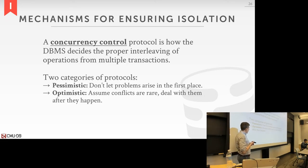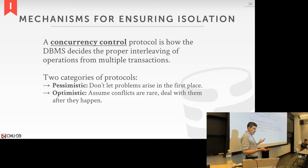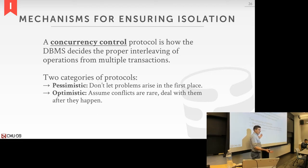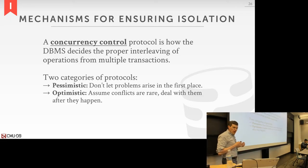There are two categories of concurrency control protocols. Pessimistic protocols assume transactions will conflict, so they require acquiring locks before doing anything — two-phase locking, covered Monday next week. Optimistic protocols assume conflicts are rare, so they let transactions run freely and check for conflicts only at commit time — timestamp ordering, covered Wednesday next week. Optimistic concurrency control was actually invented here at CMU in the 1980s.